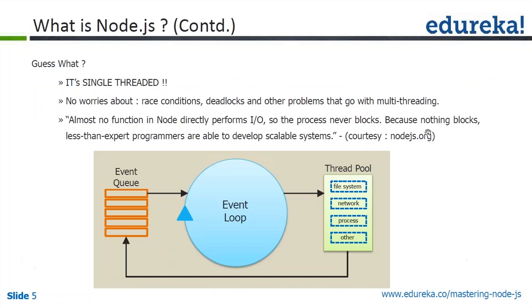One of the most important features about Node.js is it's single-threaded. It is a single-threaded architecture, and what this allows you to do is you don't have to worry about things like race conditions, deadlocks, and other problems that go with multi-threading. Let me explain why the designers behind Node.js decided to make it single-threaded.